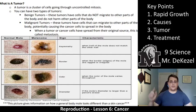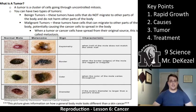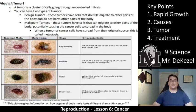Now we're getting into key point three: the tumor. A tumor is a cluster of cells going through uncontrolled mitosis. You can have two types. Benign tumors are cells that do not migrate to other parts of the body and don't really harm anything — they're just taking up space, which isn't good, but they are less dangerous than malignant tumors. Malignant tumors can migrate to other parts of the body, causing cancer cells to spread and causing a lot more damage.